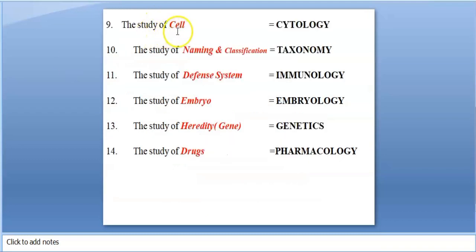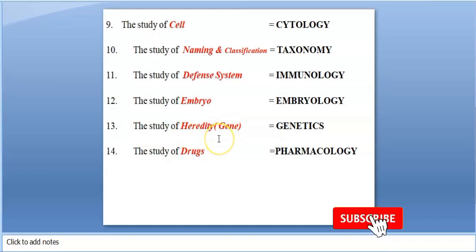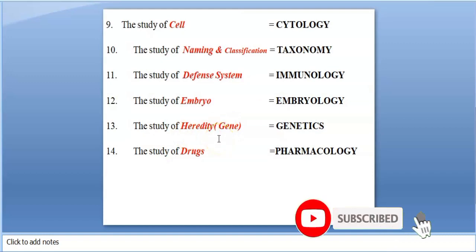The study of Cells is called Cytology. The study of naming and classification is called Taxonomy. The study of the defense system is called Immunology. The study of the embryo is called Embryology. The study of heredity and genes is called Genetics. The study of drugs is called Pharmacology.